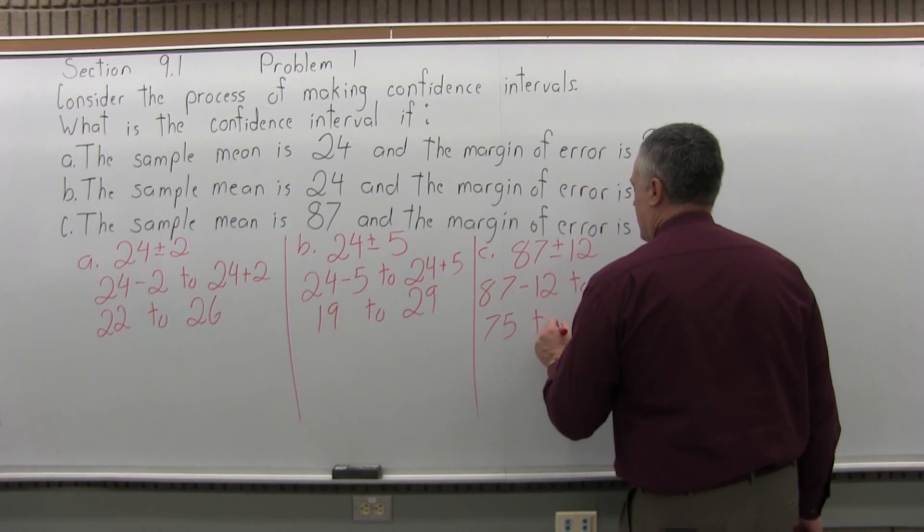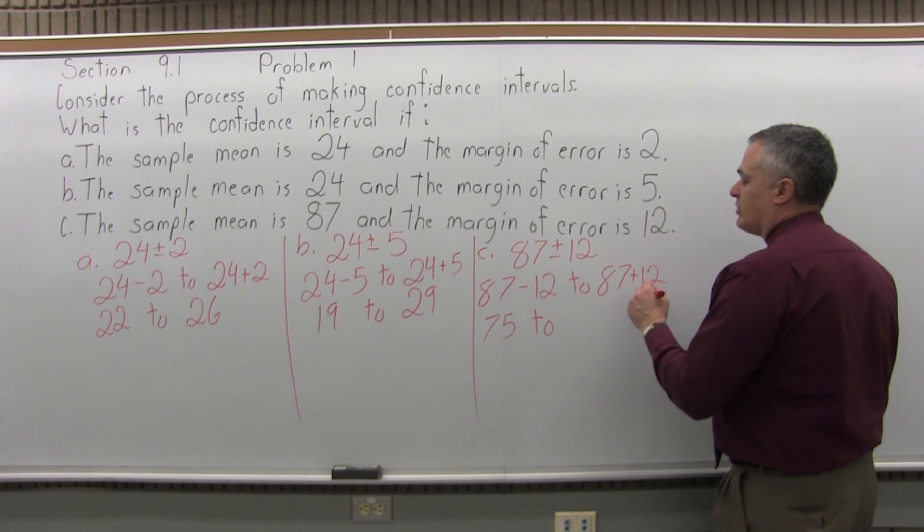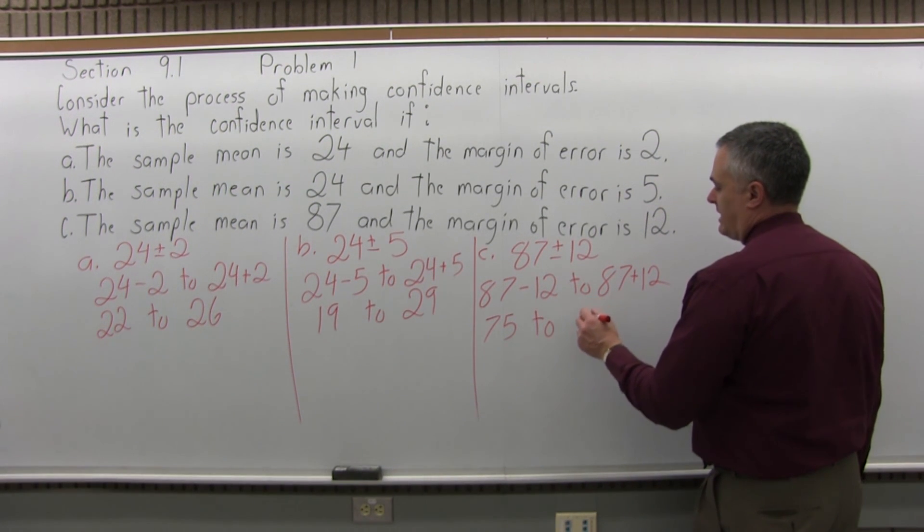And the upper end, 87 plus 12, would be 99.